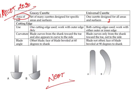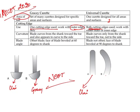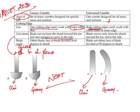For the Gracey curette, only one cutting edge is used, whereas for the universal curette, both cutting edges are used. The Gracey blade curves from the shank and also curves to the side — meaning it is curved in two planes — whereas the universal curette is curved in only one plane. The Gracey has an offset blade where the face is beveled at 60 to 70 degrees, whereas the universal has no offset and is beveled at 90 degrees to the shank.